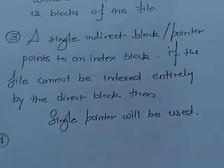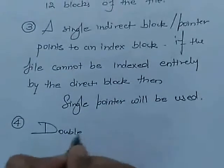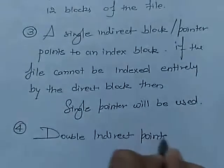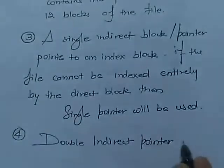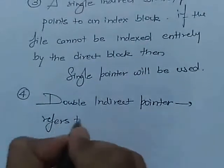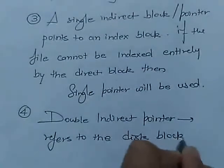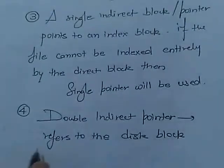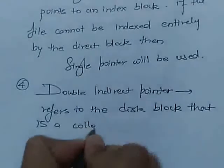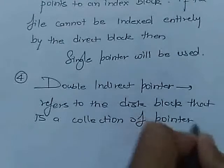The fourth one is the double indirect pointer. This pointer refers to a disk block that is a collection of pointers.